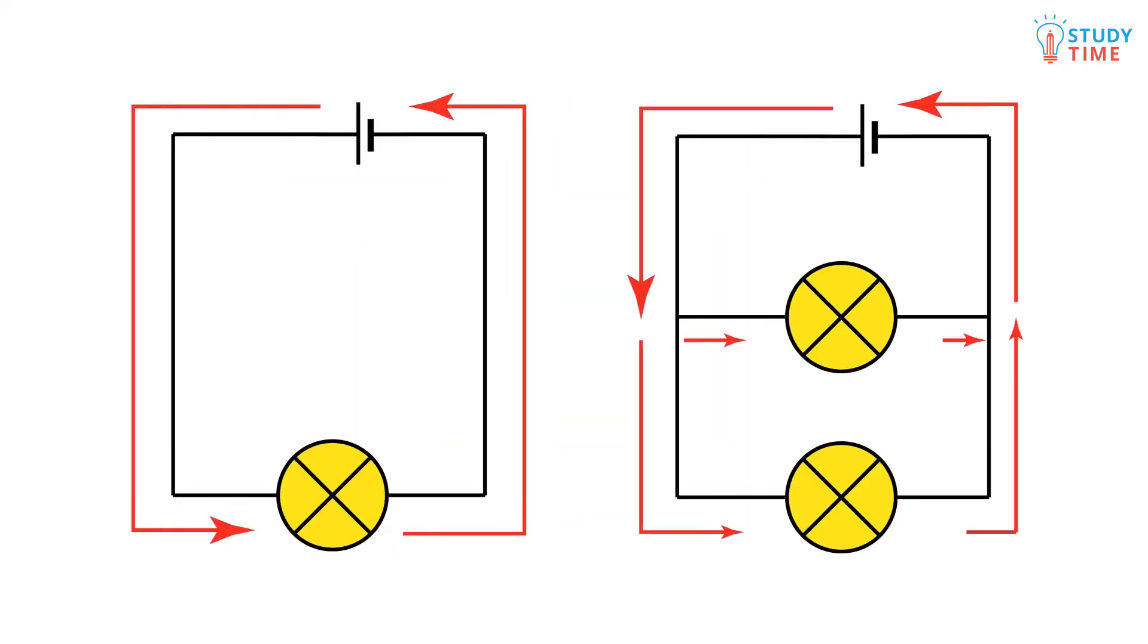The opposite of a series circuit is a parallel circuit. In every series circuit there's only one possible path for the flow of electricity to take. Well in every parallel circuit there'll be several paths. So since the electricity can flow down both of these paths at once, both of these light bulbs will be illuminated at once.